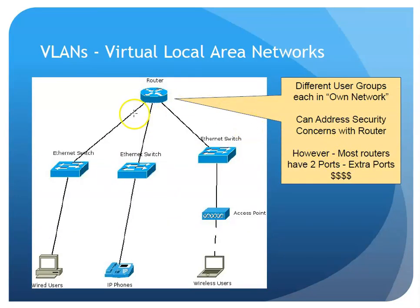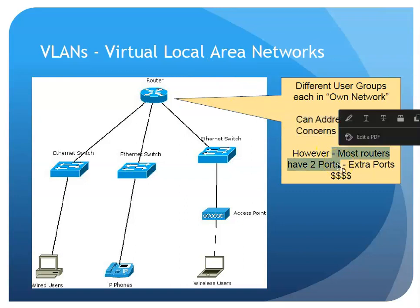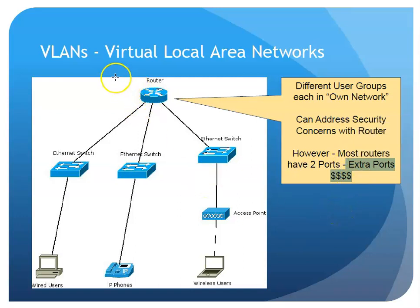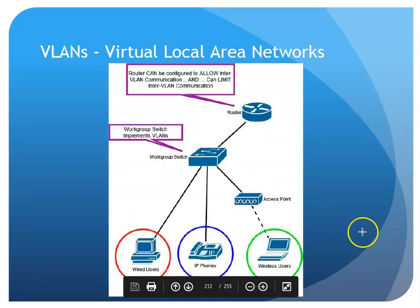I could put a router in here to separate traffic out — it makes sense and would accomplish the goal. I can add security rules on the router to limit traffic. However, most commercial routers only have two ports, kind of like an in and an out. Extra ports are available but they are pretty pricey. So in many cases, using a router alone is not a practical solution.